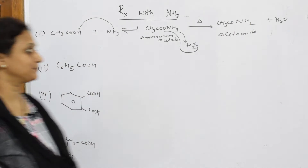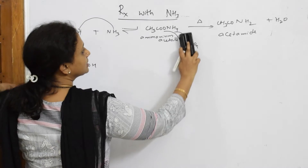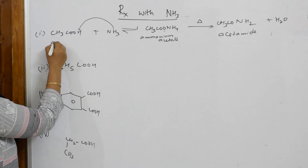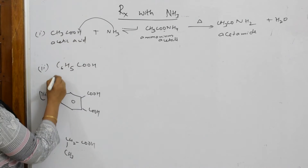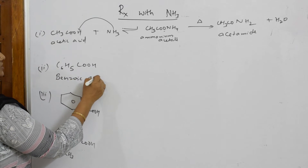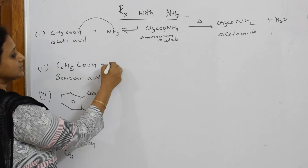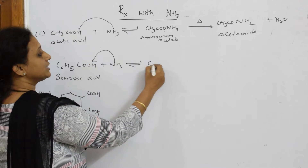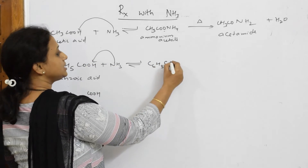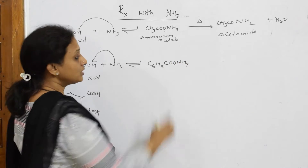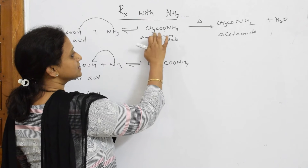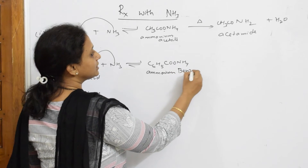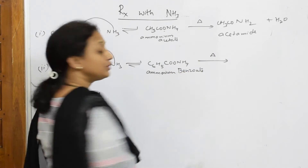Now let us start with the next reaction. Suppose in the paper you are given benzoic acid — a benzene ring with COOH. Write ammonia, write a reversible reaction arrow. The ammonia adds to benzoic acid to form C6H5COONH4, which is ammonium benzoate. Write down: ammonium benzoate.